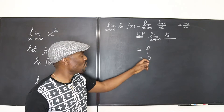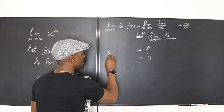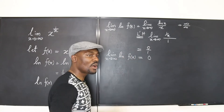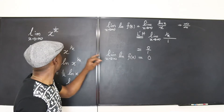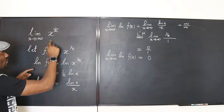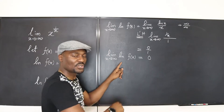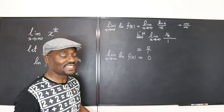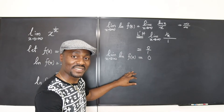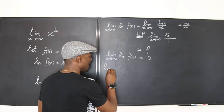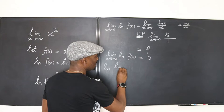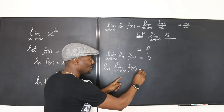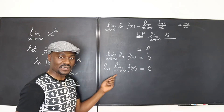We end up with 0 for the right-hand side, but the left-hand side is still the limit as x goes to infinity of ln(f(x)). What we want is just the limit of f(x). The key limit law states that the limit of a function is the function of the limit, so I can rewrite this as: natural log of [the limit as x goes to infinity of f(x)] equals 0.